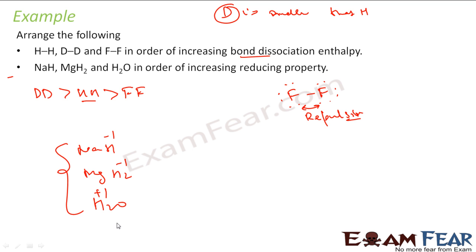So H2O is least because reducing property means they themselves want to get oxidized. So that means these two wants to get oxidized to plus one state, and this is already in plus one, so this will be the least actually.